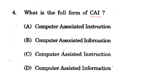The full form of CAI - the options include computer-associated instruction, computer-assisted instruction, and computer-assisted information. The correct option is C: Computer-Assisted Instruction - not 'associated' and not 'information.' This is an instructional technique where computers are used for students' material learning and skill development, combining text, graphics, sounds, and video to enhance the learning process.